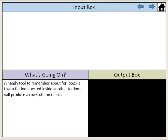A handy tool to remember about for loops is that a for loop nested inside another for loop will produce a row-column effect.